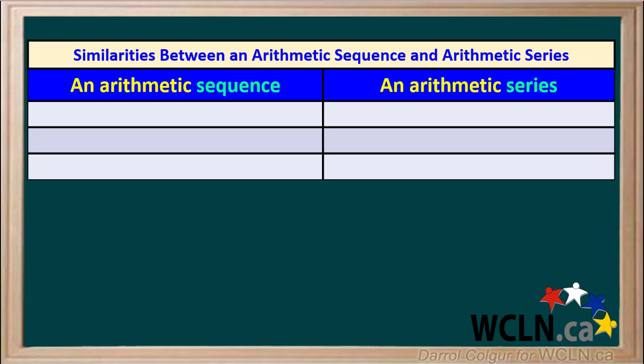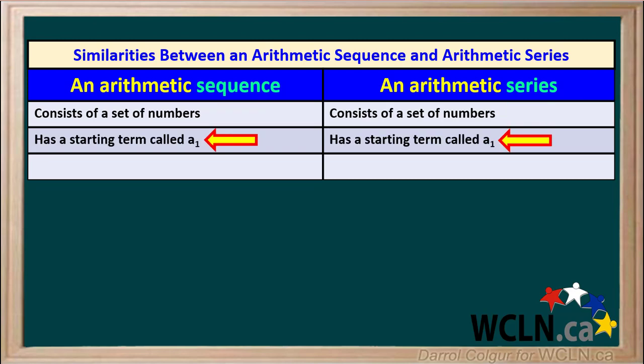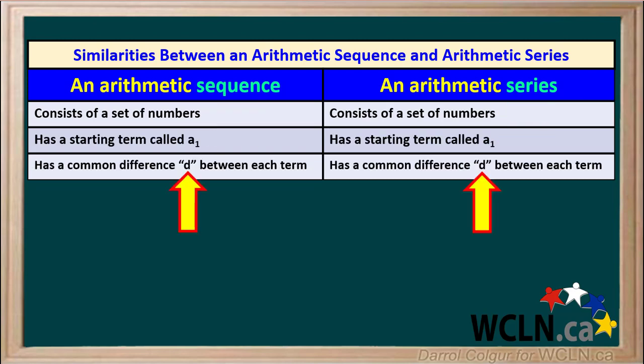Now we can summarize the similarities between an arithmetic sequence and an arithmetic series. Both consist of a set of numbers. Both have a starting term, which we call A1, and both have a common difference D between each term.